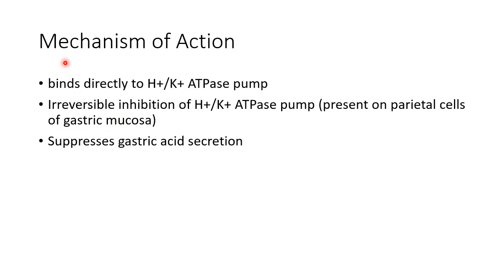Now let us see about the mechanism of action of proton pump inhibitors. Proton pump inhibitors bind directly to the H-positive K-positive ATPase pump — that is, the hydrogen-potassium ATPase pump — and cause reversible inhibition of this pump. This pump is present on parietal cells of gastric mucosa, and this eventually leads to suppression of gastric acid secretion.